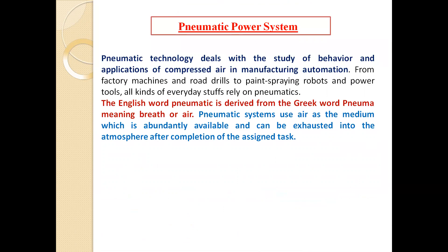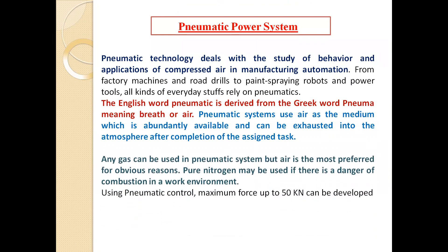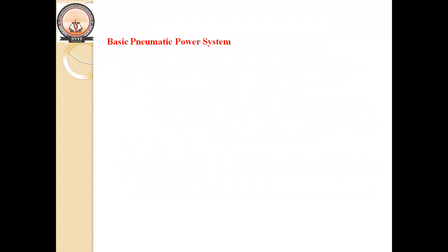Pneumatic systems use air as the medium, which is abundantly available and can be exhausted into the atmosphere after the completion of the assigned task. Not only air — any gas can be used in the pneumatic system — but air is the most preferred since it is easily available. Pure nitrogen may be used if there is a danger of combustion in a work environment. Using pneumatic control, a maximum force of up to 50 kilo-newtons and a maximum pressure of 6 to 10 bar can be developed. Therefore, pneumatic power systems are used for small-size applications only.